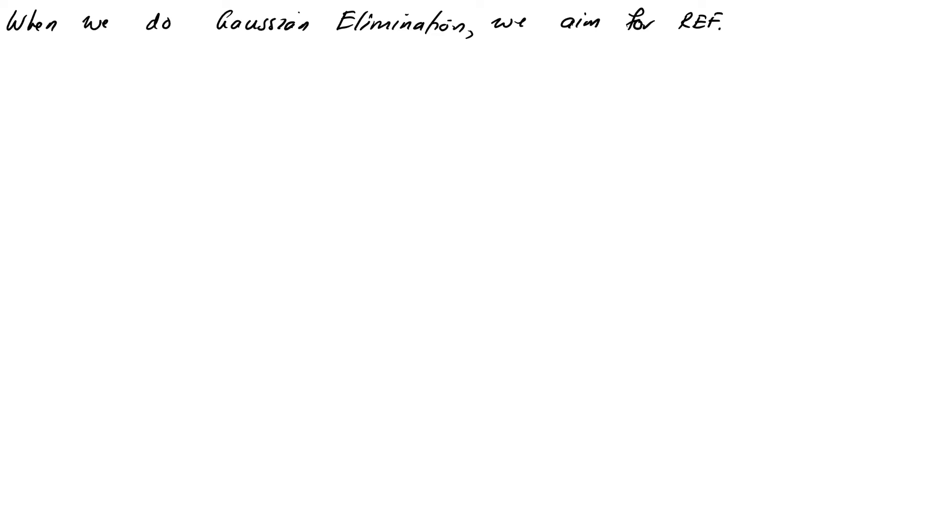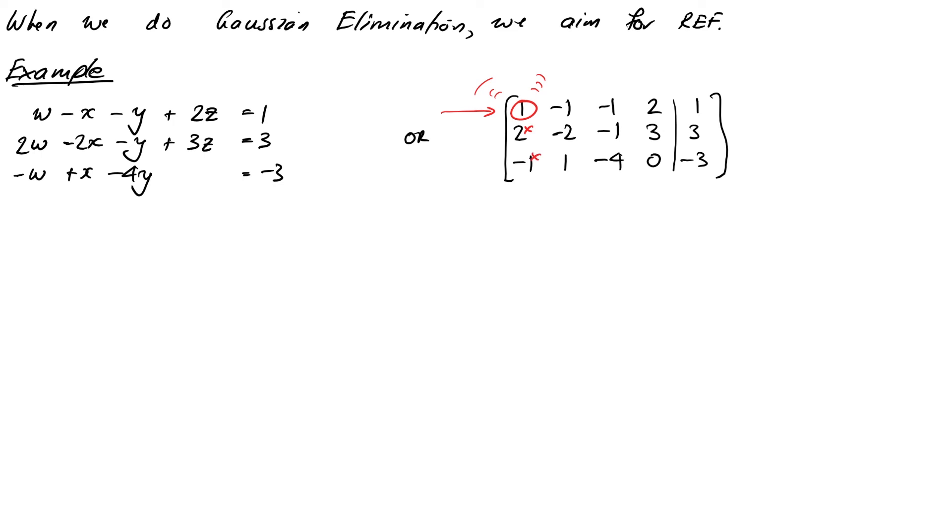Let's practice on this one. We have a system of three equations and four variables: w - x - y + 2z = 1, et cetera. We'll write it down as an augmented matrix and get started. We can see a non-zero pivot in column one on the first row, so we don't need to do any row swaps. We'll do our two operations to get zeros beneath that one. They will be row 2 goes to row 2 minus 2 row 1, and row 3 goes to row 3 plus row 1. Working that through we get the two new rows to be [0, 0, 1, -1, 1] and [0, 0, -5, 2, -2].